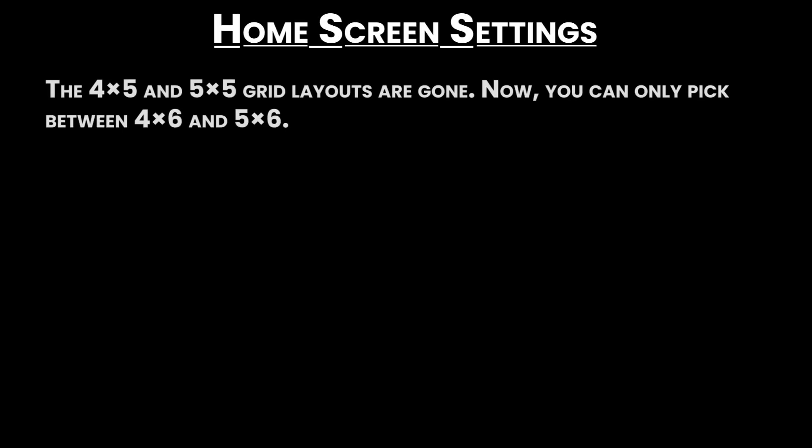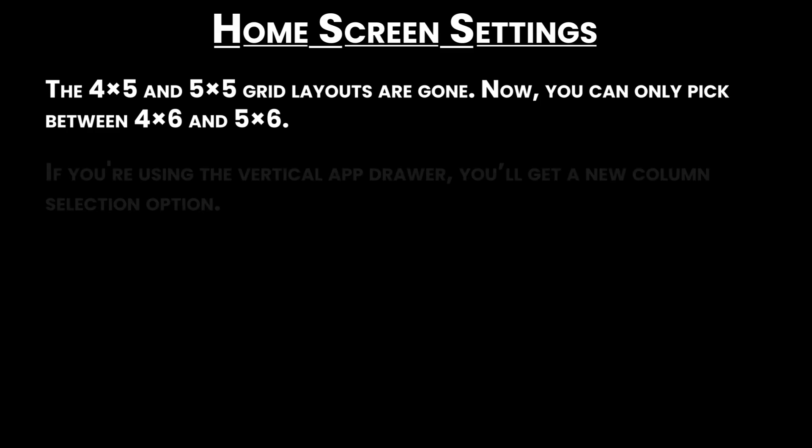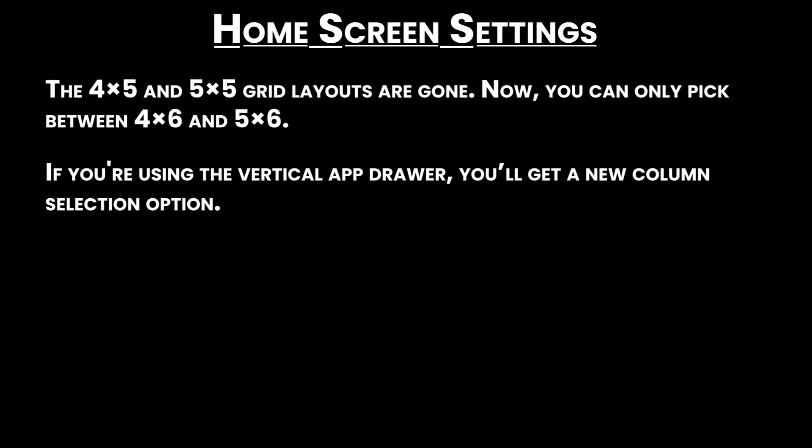Home screen settings: The 4x5 and 5x5 grid layouts are gone. Now you can only pick between 4x6 and 5x6. If you're using the vertical app drawer, you'll get a new column selection option. Wallpapers are now grouped under Featured, but this doesn't apply to the graphical or color categories.